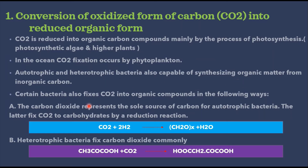Besides these, autotrophic and heterotrophic bacteria are also capable of synthesizing organic matter from inorganic carbon. For autotrophic bacteria, CO2 is the sole carbon source — they fix carbon dioxide to carbohydrates by a reduction reaction: CO2 in the presence of hydrogen yields carbohydrates and releases water. For heterotrophic bacteria, CO2 is fixed and combined to give rise to pyruvic acid, which then combines with CO2 to yield oxaloacetic acid (OAA). This completes the conversion of oxidized carbon dioxide into reduced organic form.